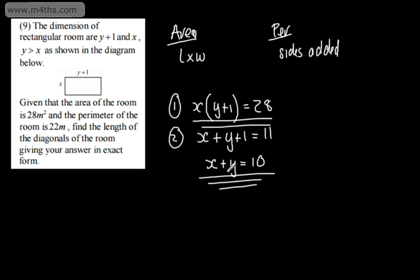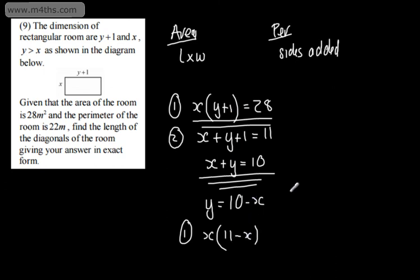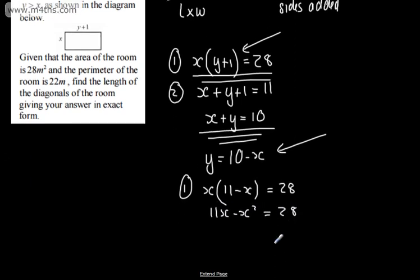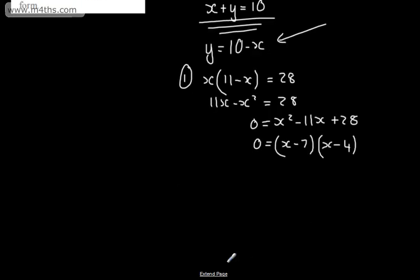From equation 2, y equals 10 minus x. Substituting into equation 1: x times (10 minus x plus 1) equals x times (11 minus x) equals 28. Expanding: 11x minus x squared equals 28. Rearranging: x squared minus 11x plus 28 equals 0. Factorising: (x minus 7)(x minus 4) equals 0, giving x equals 7 or x equals 4.